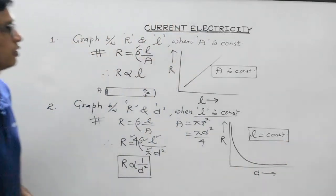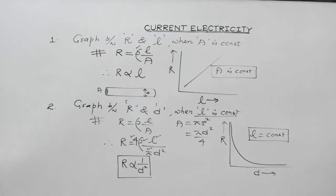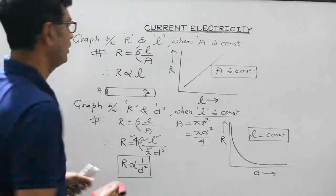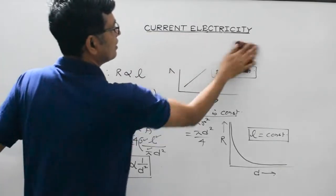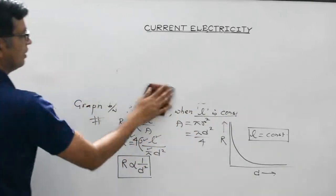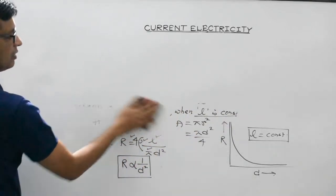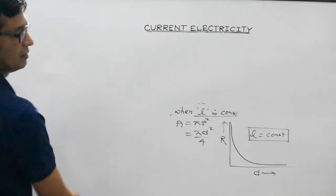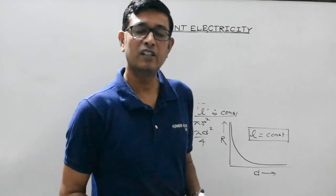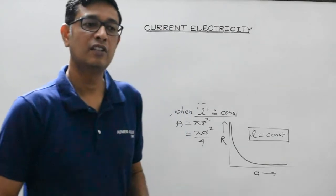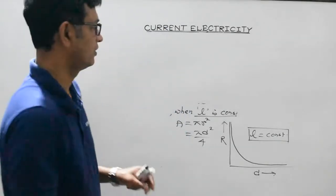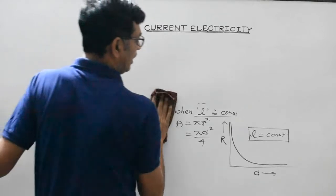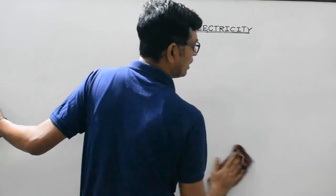Let's attempt another interesting question. The V-I graph is plotted for a conductor at two different temperatures T1 and T2.